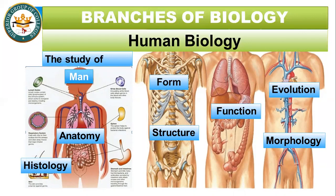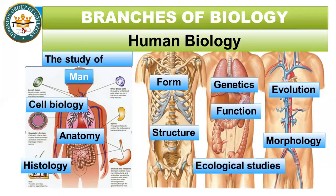Human biology also includes evolution and ancestral history, genetics, cell biology — the study of cells — and ecological studies in environmental biology and ecology as they relate to the human being. That means all types of branches of biology are directly related to the human being. So, simply, the definition is: the study of man.